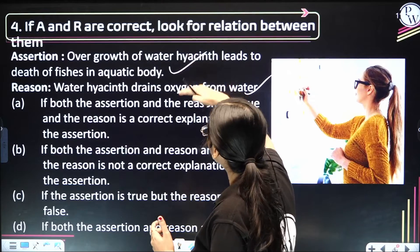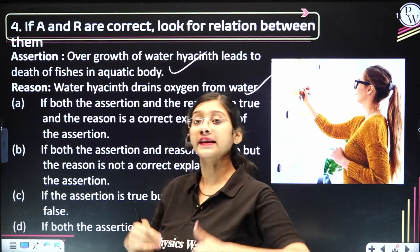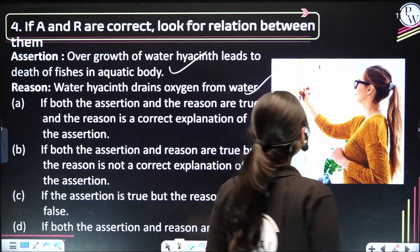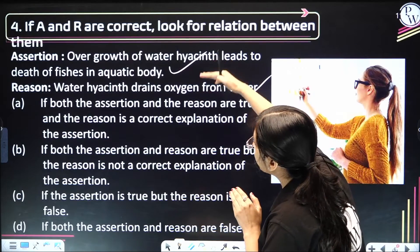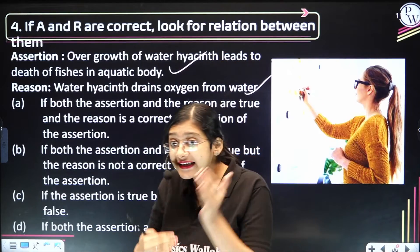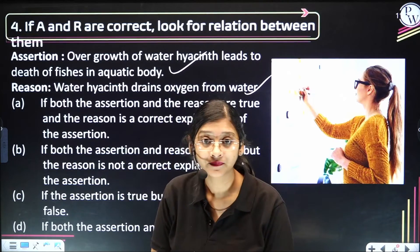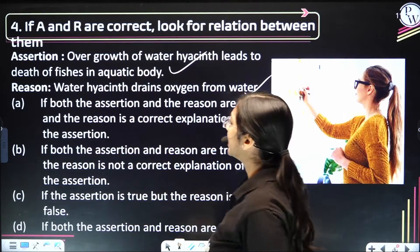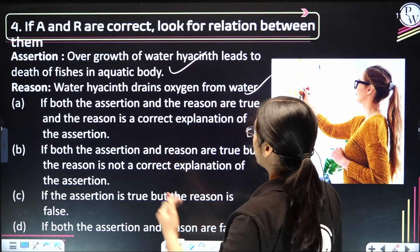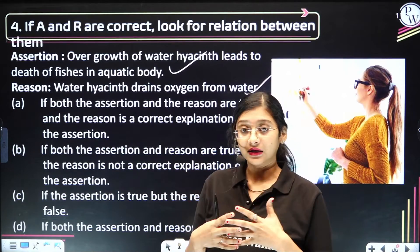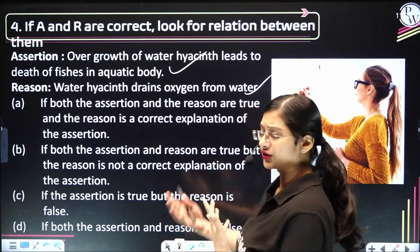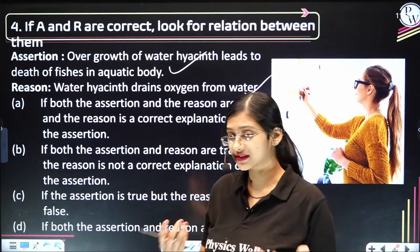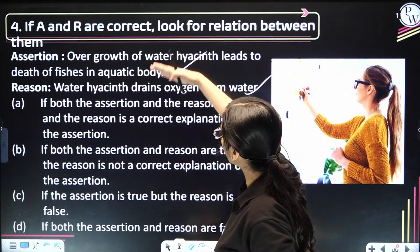If you feel both statements are correct, now you have to find the relationship between these two statements. Are we able to find any relationship, or are they two individual separate correct statements? Overgrowth of water hyacinth leads to death of fishes — correct. Water hyacinth drains oxygen from water — also correct. Now what is the relationship between these two?